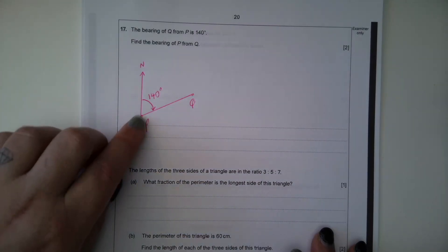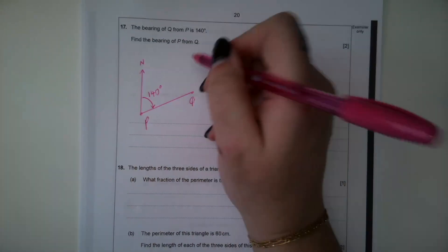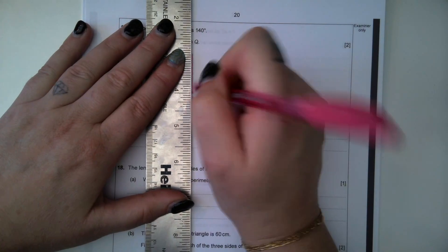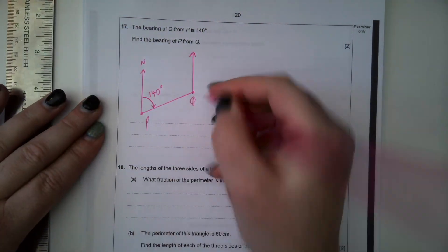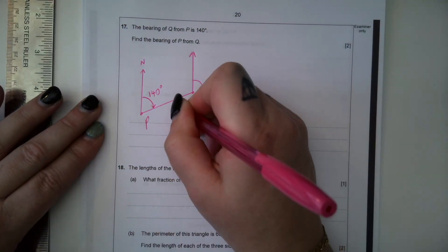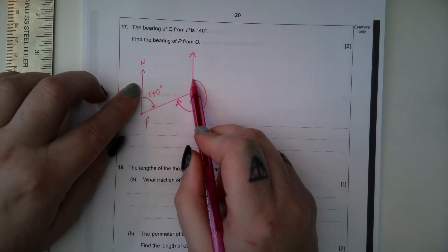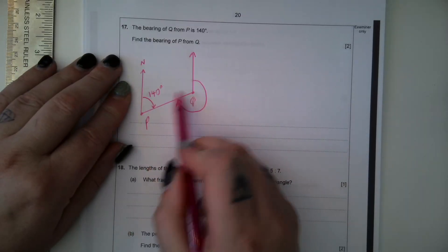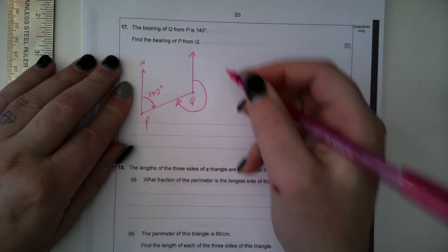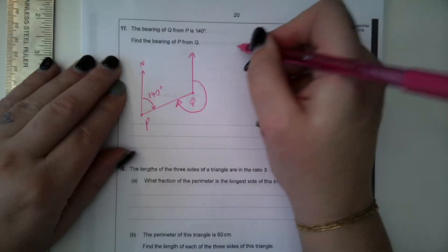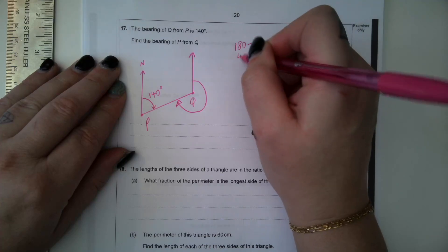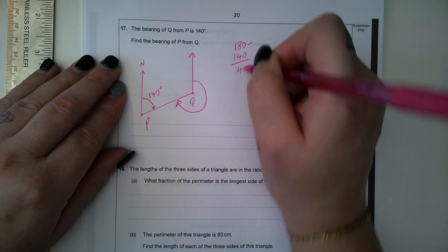So if we were to draw a north line here, the bearing of P from Q would be this bearing here. Now north lines are parallel, they're parallel lines, which means these two angles are co-interior. The co-interior angles add to 180, so 180 take away 140 leaves us with 40, so this must be 40 degrees.